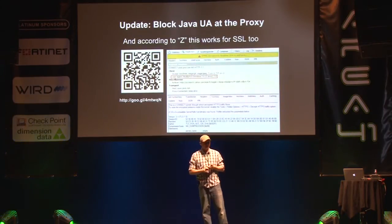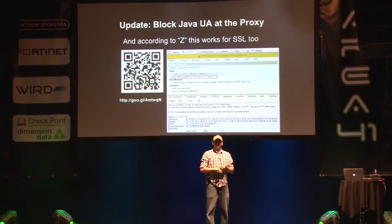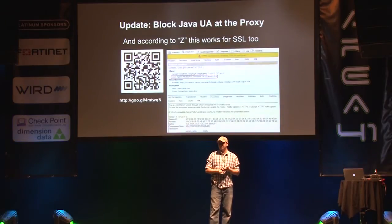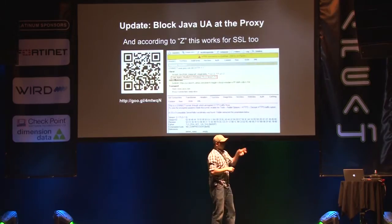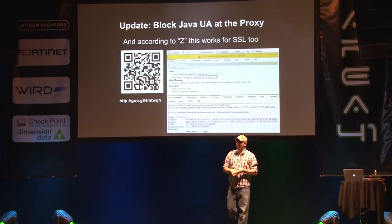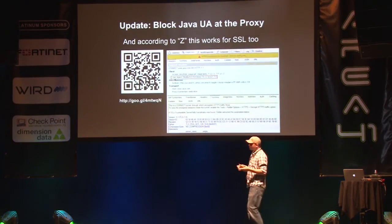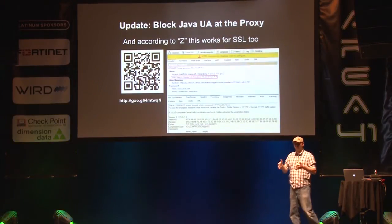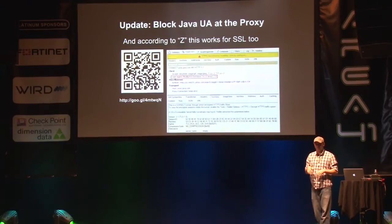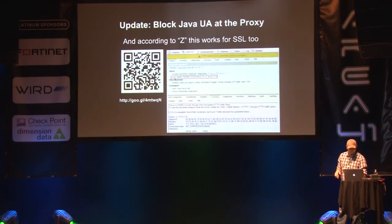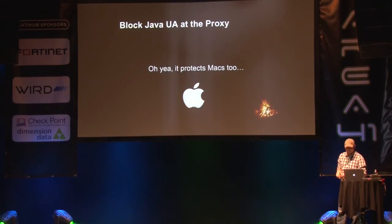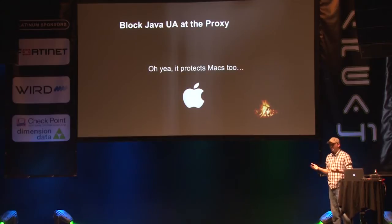After I posted a blog post on how to do this with Squid, a guy named Z on Reddit said this works in SSL too — the user agent is sent across proxies that use SSL. So now not only am I blocking all of the memory corruption bugs with EMET, I'm blocking all Java problems with my proxy — even if the attacker uses SSL on their website and tries to encrypt everything.